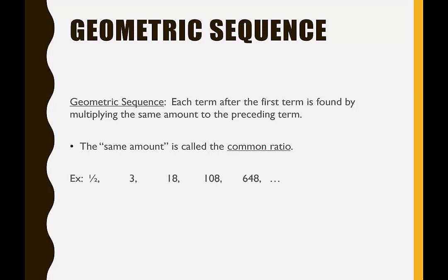So in the example one-half, three, 18, 108, 648: to get from one-half to three, I could multiply by six. To get from three to 18, multiply by six. To get from 18 to 108, multiply by six.